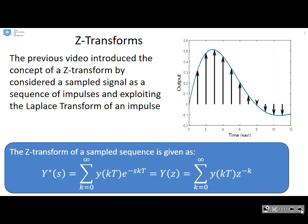The previous video introduced Z-transforms, basically saying you could consider a sampled signal as a sequence of impulses. By exploiting the Laplace transform of an impulse, you end up with a Z-transform expression like this. Y of Z is the sum from k equals 0 to infinity of y(kT) times Z to the minus k.